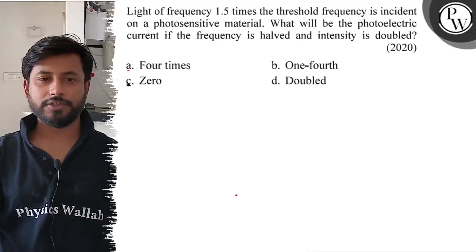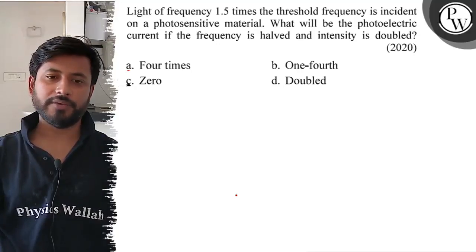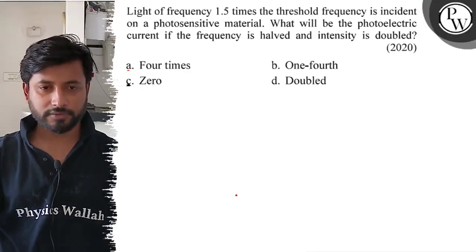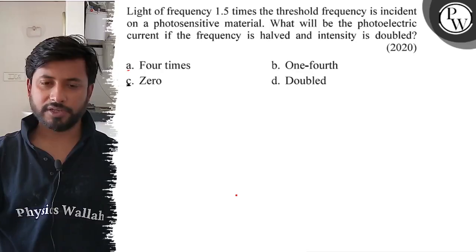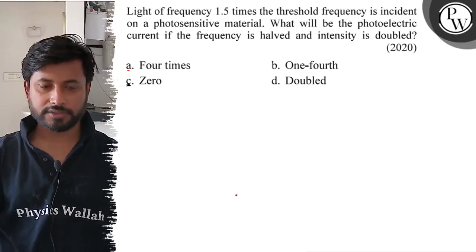Hello, let us see this question. Light of frequency 1.5 times the threshold frequency is incident on a photosensitive material. What will be the photoelectric current if the frequency is halved and intensity is doubled?